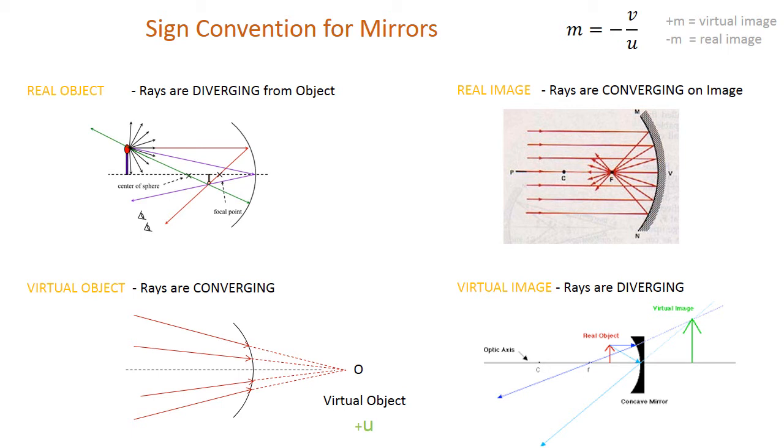Similarly, for a real image the rays are converging on the image, and for a virtual image the rays are diverging from the image. When we use the formula magnification equals minus V by U for spherical mirrors, if we get a positive M it is a virtual image and if we get a minus M it's a real image.